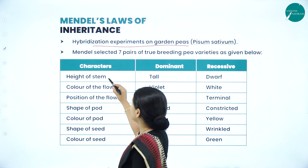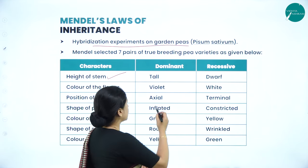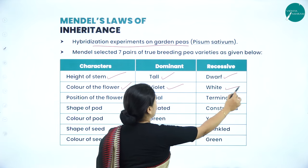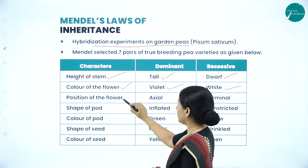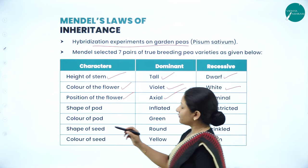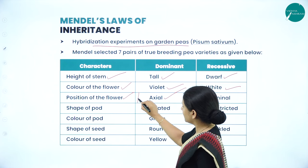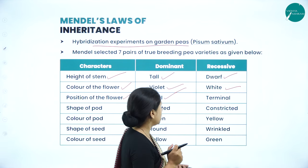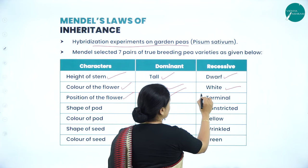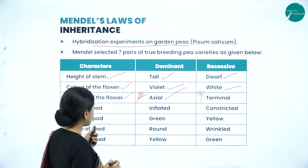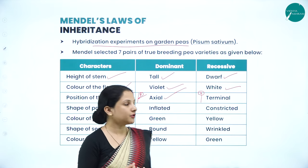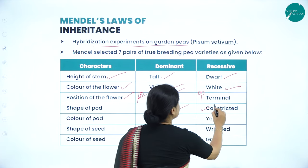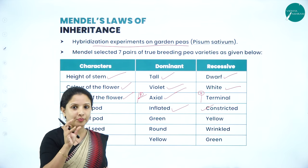He took various characters. For height of the stem, he chose tall (dominant) and dwarf. For color of the flower, he chose violet and white. For position of the flower, he studied whether it was axial — arising from the nodal region between the stem and the petiole — or terminal, meaning the flowers develop at the tip of the stem. For shape of the pod, he chose inflated (dominant, properly round) and constricted (with ridges and grooves).